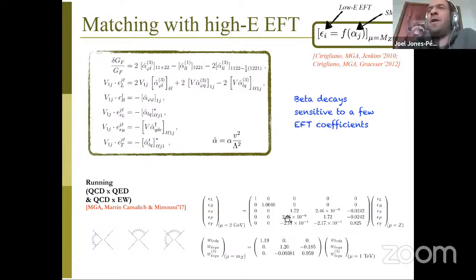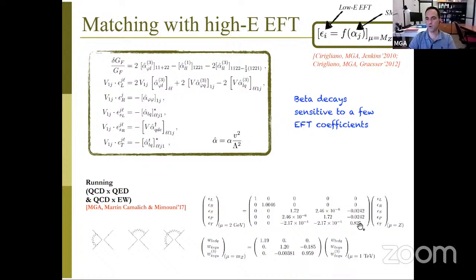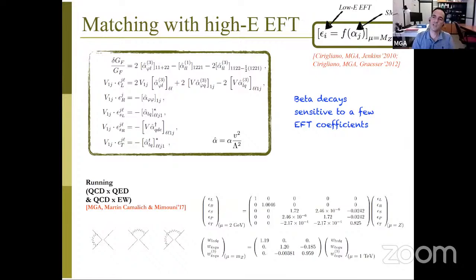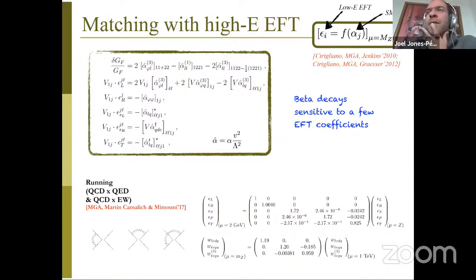The operator mixing between EFTs is small — at the level of 10⁻⁴ to 10⁻² — because it is generated by weak interactions. However, it can still be important: for instance, a tensor interaction through loops mixes into a pseudoscalar interaction, which is very tightly constrained from pion decay. This indirect loop-level constraint provides a very strong bound on the tensor coefficient.